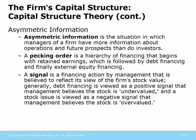First, let's talk about some definitions. There's something called asymmetric information, and that is when one person or one group of people has more information than others. Managers have more information than anybody else. In fact, most owners don't know anything at all about the company's operations on a day-to-day basis.